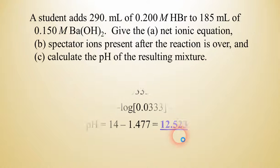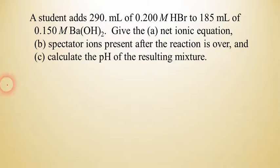So let's try another example to make sure that we understand how to do this. This time, the student is going to add 290 milliliters of 0.2 molar hydrobromic acid to 185 milliliters of 0.15 molar barium hydroxide. Now, the net ionic equation is basically the same as it was before. It's a strong acid and a strong base. So it's the same net ionic equation.